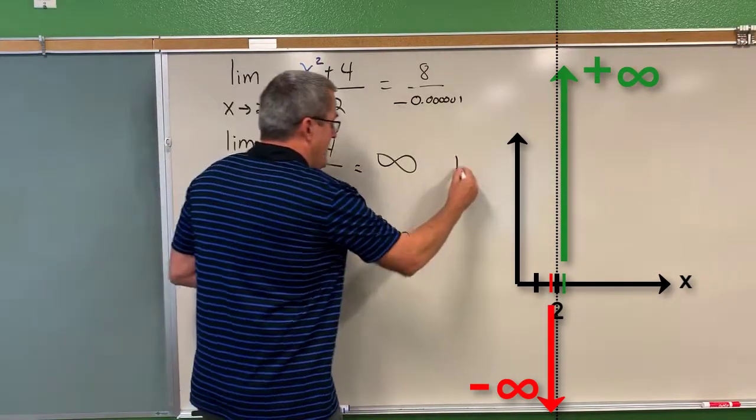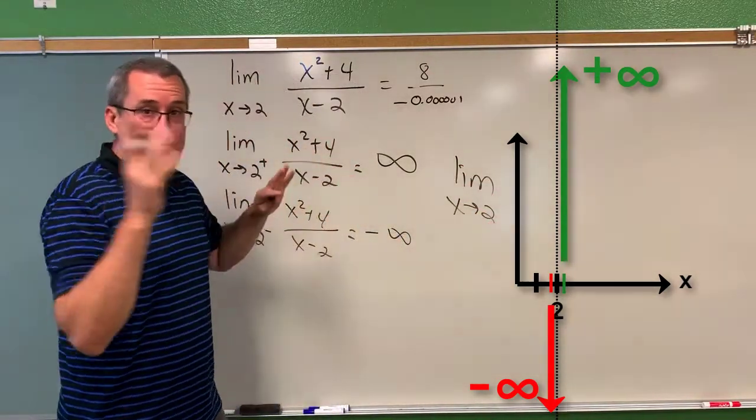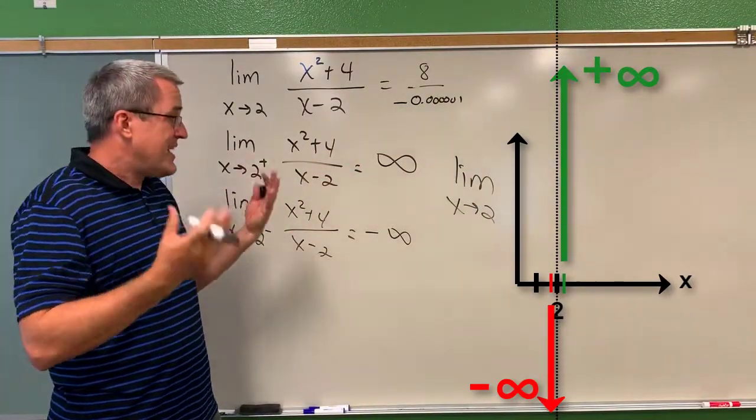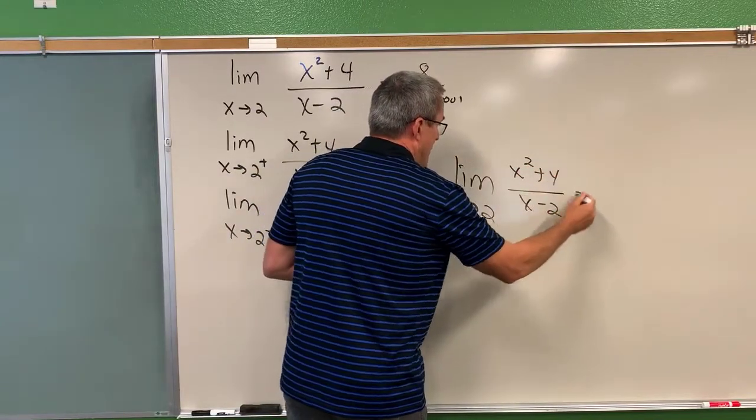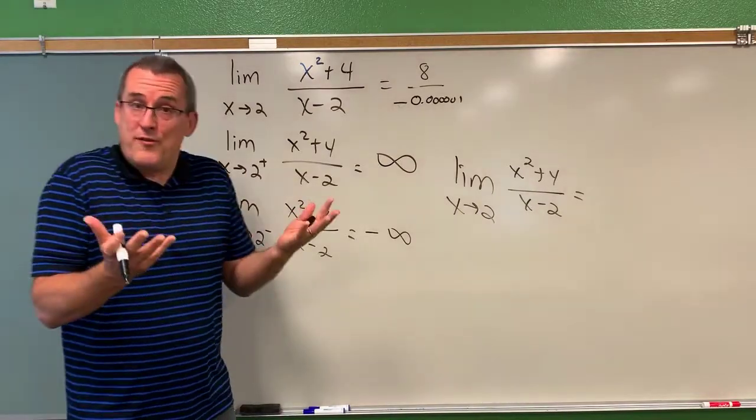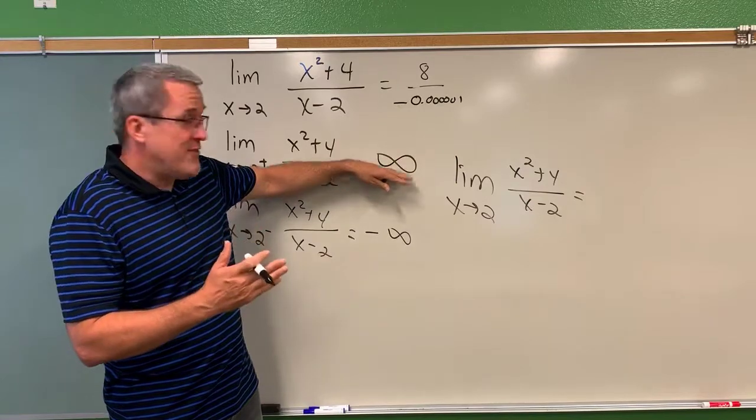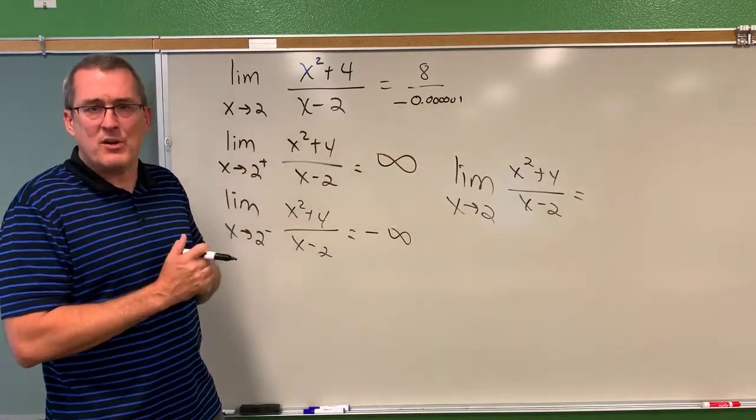So here's what we say. The limit as x approaches 2, and we don't indicate from the right side or the left side, from the positive side or the negative side, we just say the limit as x approaches 2 of x squared plus 4 over x minus 2, what we say is this limit does not exist. In order for a limit to exist, we would have to see the same output behavior from both sides of, in this case, 2, or whatever the input quantity is.